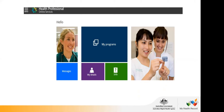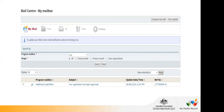If you don't want to keep logging into PRODA to check your message box, you can click into Messages, then go to Settings and update your email preferences so that messages are also sent to an alternate email address. That's where you can select the settings icon to update the Mail Centre email notifications.